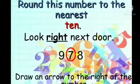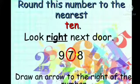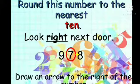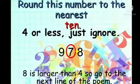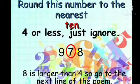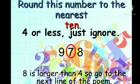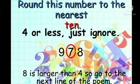What is the second line of the poem? Look right next door. What is the next number? 8. Third line of the poem is: 4 or less, just ignore. Here, the number is 8. It is greater than 4, so just ignore this rule.